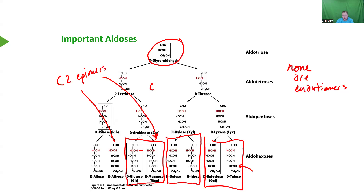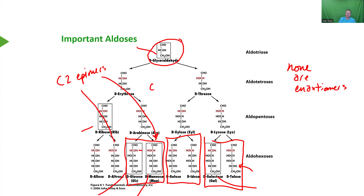There's a total of five aldoses. I want you to know the structures of glyceraldehyde, ribose, glucose, mannose, and galactose. It's important that you know how these sugars can be changed to make a different version of them. For example, if I displayed the structure of D-glyceraldehyde, could you identify L-glyceraldehyde? That's simple — just switch the one chiral carbon. But identifying L-glucose is more complicated; you have to remember that it is a total mirror image.